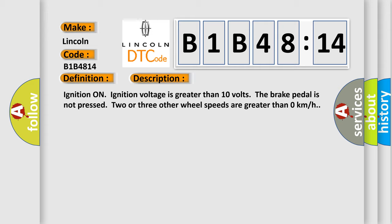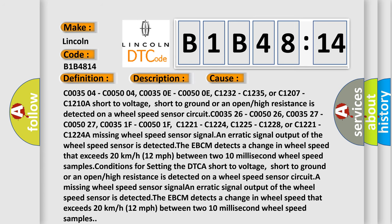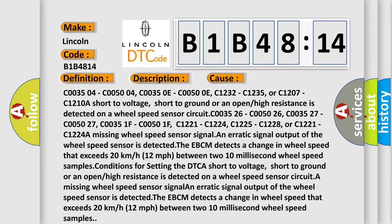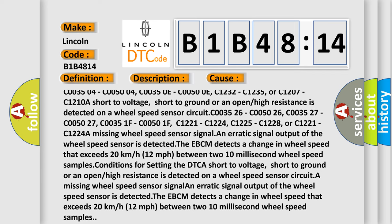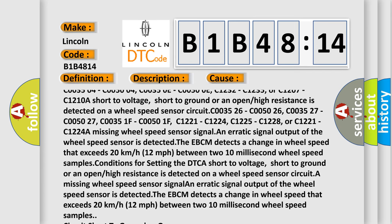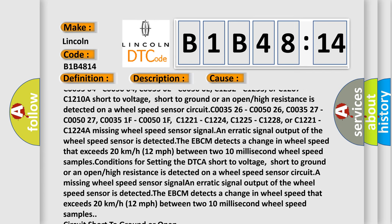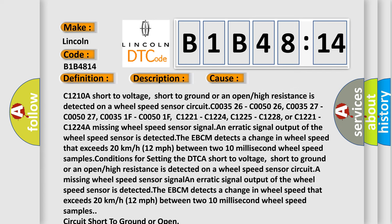This diagnostic error occurs most often in these cases: C003504, C005004, C00350E, C00500E, C1232, C1235, or C1207, C1210A. A short to voltage, short to ground, or an open or high resistance is detected on a wheel speed sensor circuit.